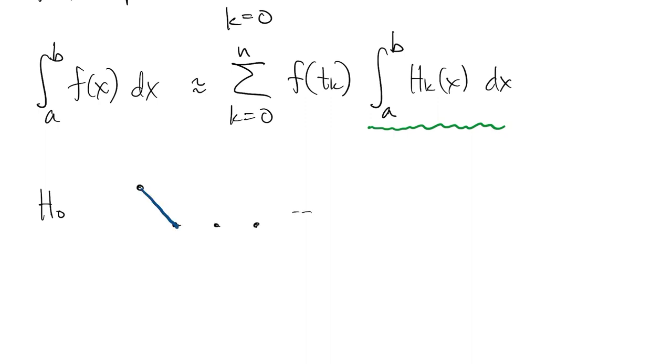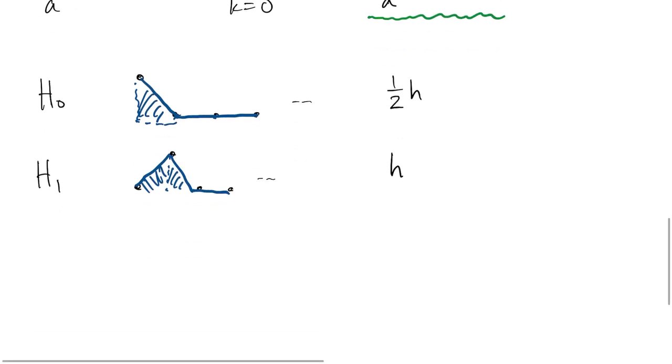The first hat function starts at 1 and goes down to 0 at t1. We just need to find the area of a triangle. That's 1 half times the base h times the height 1. The next hat function gives us two triangles of the same size, for a total of h. This repeats all the way up to the last hat function, which again just has one triangle, so we get 1 half h again.